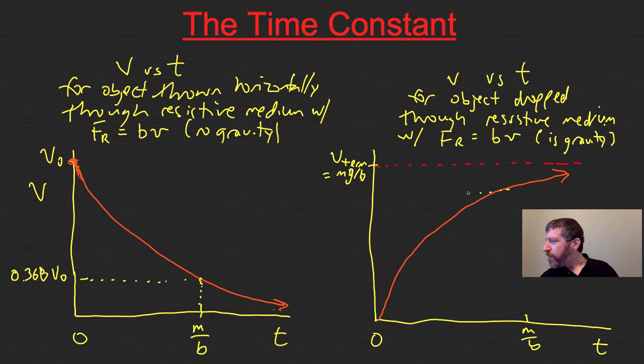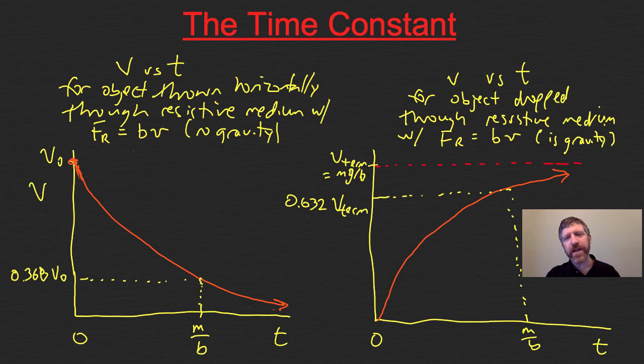For the increasing case, at time m/b, the speed will be 0.632 or 63.2% of terminal velocity. That's what the time constant is. Many systems have a similar time constant. Basically, all you do is figure out when the exponent of e equals negative one. That is simply the time constant—when the exponent of e is negative one. It's that simple.